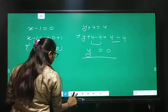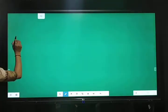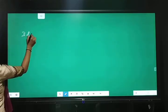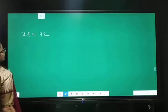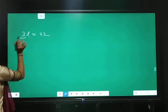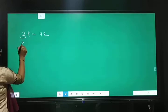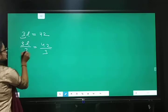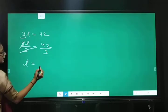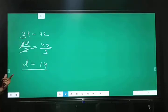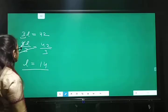Like one example is 3L equal 42. 3L equal 42. Agar aapke paas multiply me hai. Variable constant term toh aap kya karloge? Divide karoge. Toh 3L upon 3 equal 42 upon 3. 3 say 3 cancel out ho jayega. Toh L equal 3 plus 3 and 3 plus 4. Toh value of L equal 14. Clear?